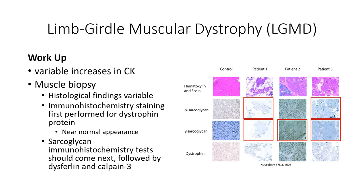Currently, NGS — or next-generation sequencing-based gene panel testing — is now available for the diagnosis of limb-girdle muscular dystrophy, and whole genome sequencing can be used in identifying de novo mutations.